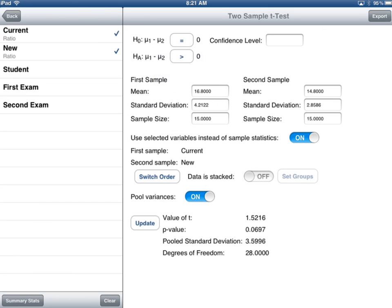Now, just quickly here, I want to go back to TC stats and I want to turn the pool variances off and update. See the difference in the p value? It was 0.06 something or other, and now it's 0.07 something or other. Now, because our alpha is 0.05, it would not have made a difference in this case.